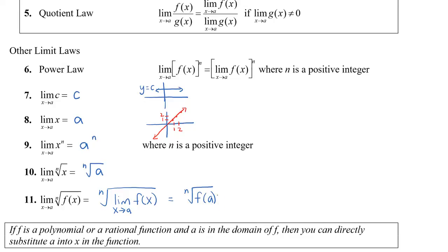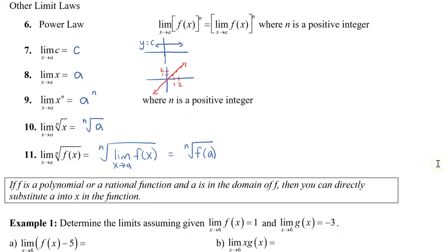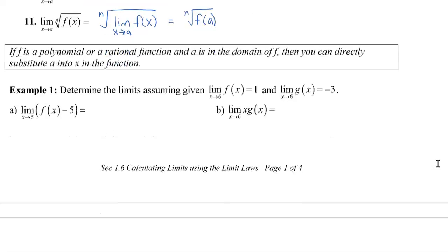Now if f is a polynomial or a rational function and a is in the domain of f, then you can directly substitute a in for x in the function. That makes it really easy to find the limits of polynomials and rational functions. Let's take a look at some examples of how to apply these different laws.